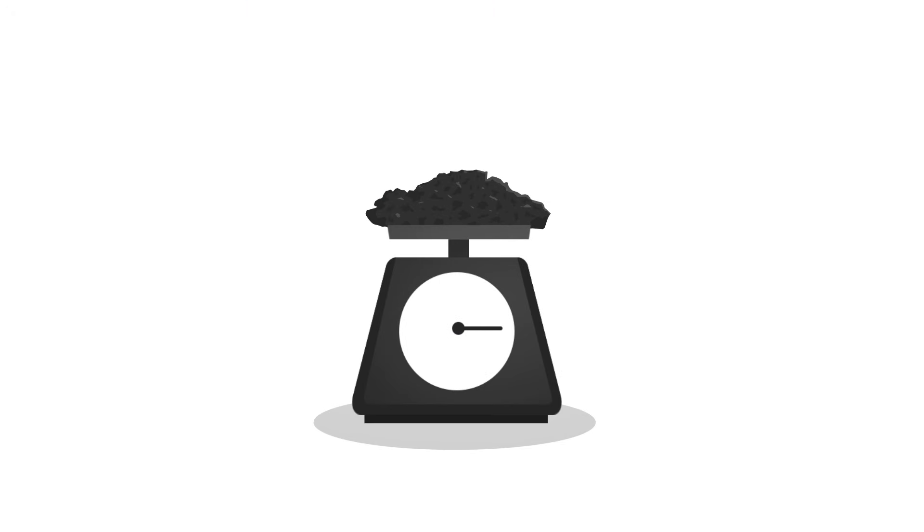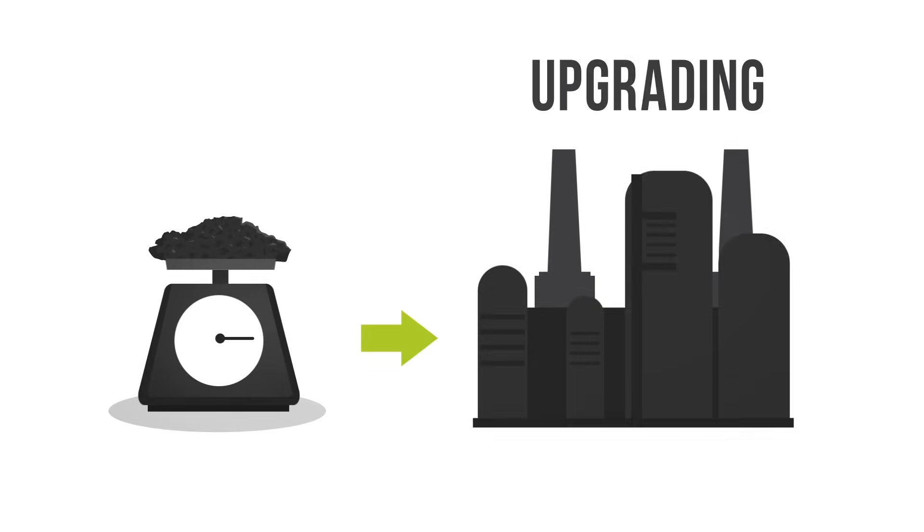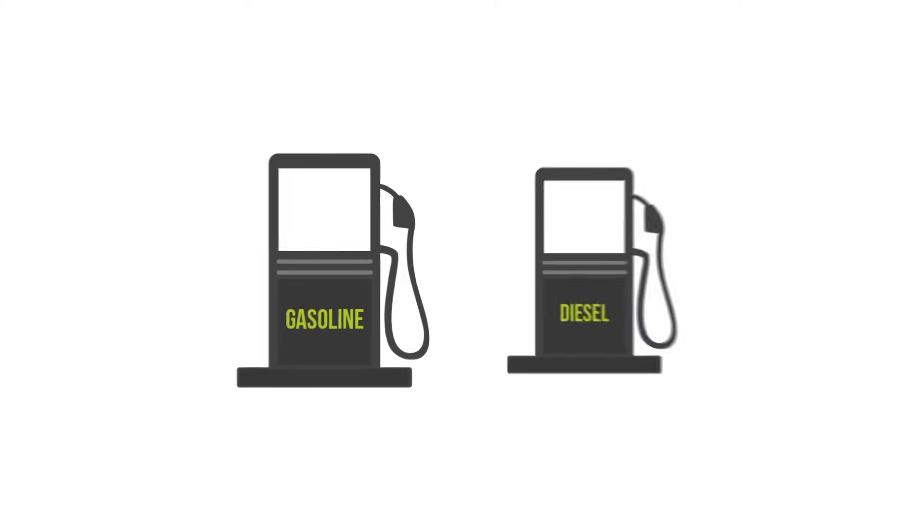Produced bitumen is heavier than conventional sources and requires a special process called upgrading to give it properties similar to conventional oil. Once processed, bitumen is refined, just like conventional oil, into common petroleum products.